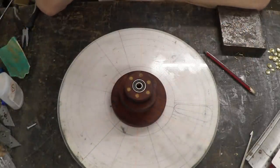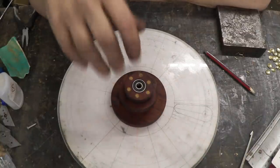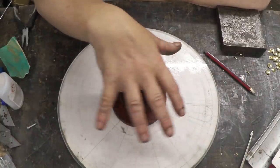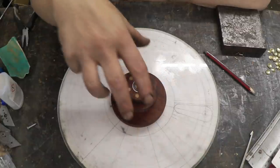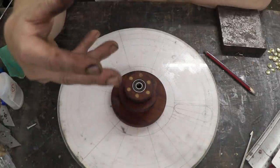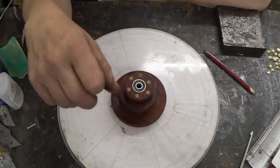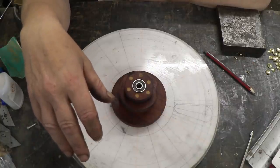So where Wimshurst differs from things like the Bonetti machine is that the Wimshurst is split up into sectors, conductive sectors. Now you don't need to do that, the Bonetti doesn't, but the Bonetti machine isn't self-starting whereas the Wimshurst is.